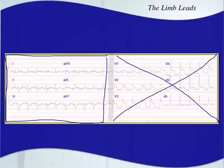In the six limb leads, leads 1, 2, and 3 are your standard leads. Lead 2 is sometimes considered the monitoring lead because a lot of times when you turn on an EKG monitor, it's automatically in lead 2, and there's a reason for that. Then AVR, AVL, and AVF are your augmented leads — the A stands for augmented. Leads 1, 2, and 3 are bipolar leads.